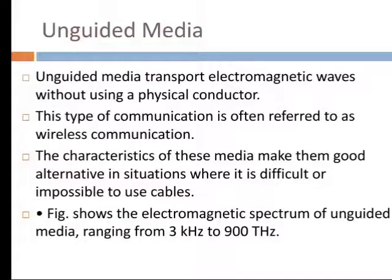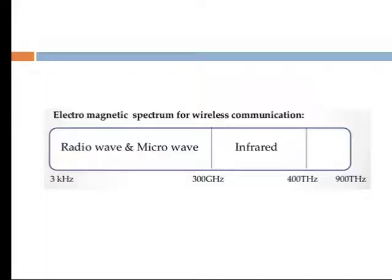The characteristics of these media make them a good alternative in situations where it is difficult or impossible to use cable. As shown in the figure, the electromagnetic spectrum for unguided media ranges from 3 kHz to 900 terahertz. Our radio wave spectrum spans 3 kHz to 900 terahertz.